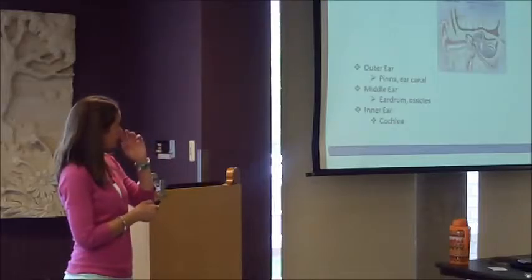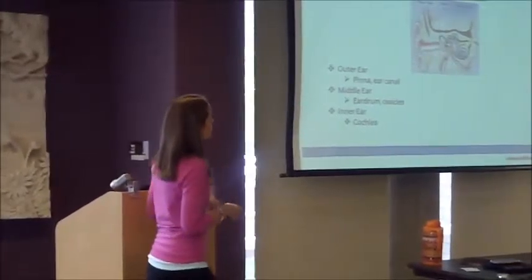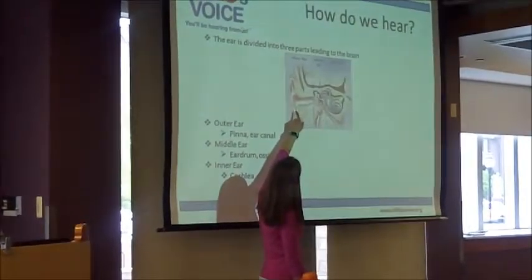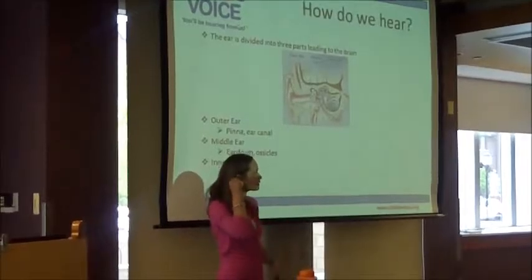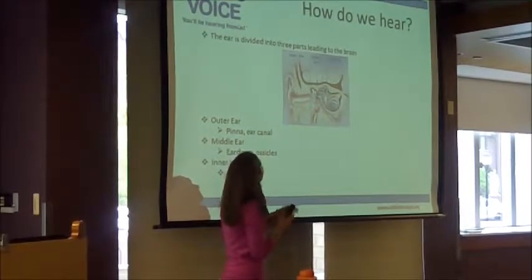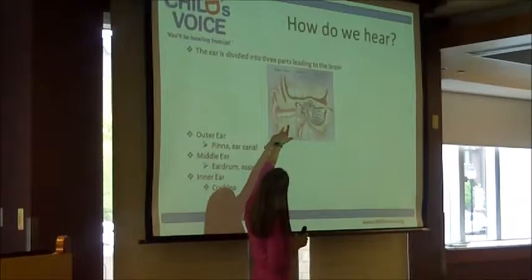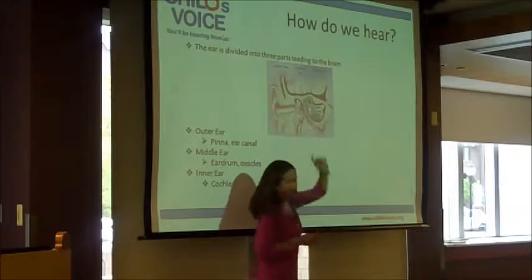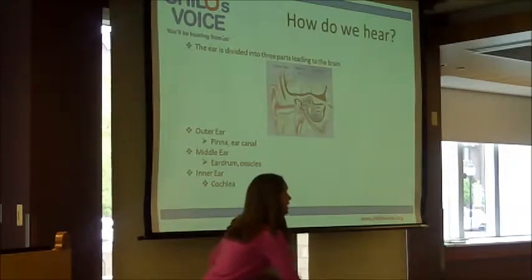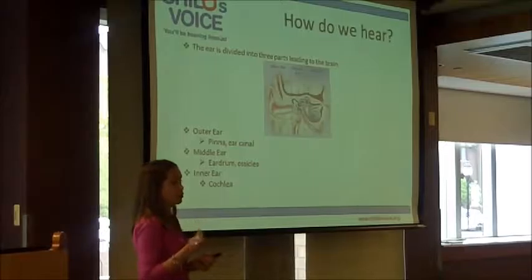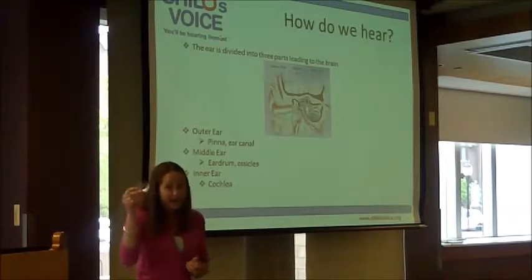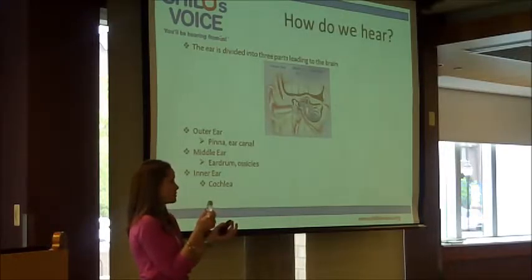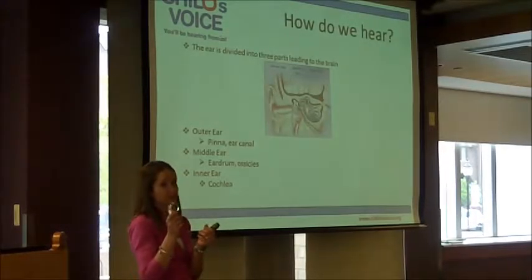So how do we hear? The ear is divided into three parts that lead up to the brain. We have the outer ear, which consists of the pinna — the little outer part that you see — then it goes into the ear canal, and the eardrum. Then these three bones, which are very hard to see, are the ossicles, and those are actually the tiniest bones in your body.